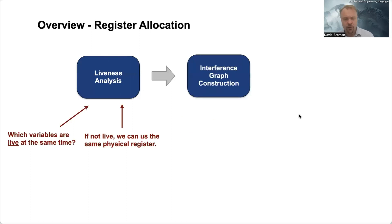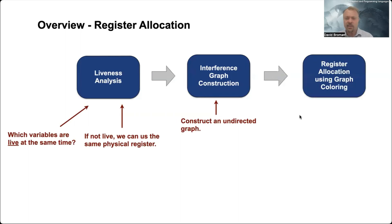To be able to do that, we need to construct this interference graph, which is an undirected graph. From that, we can then do the actual allocation.